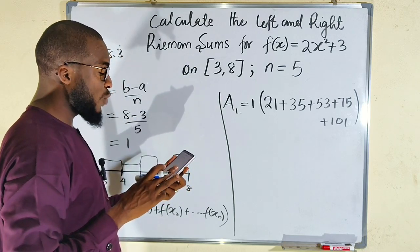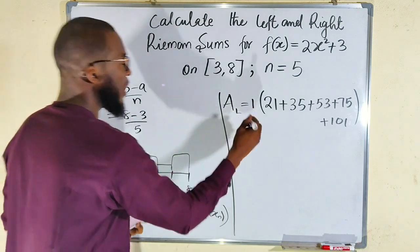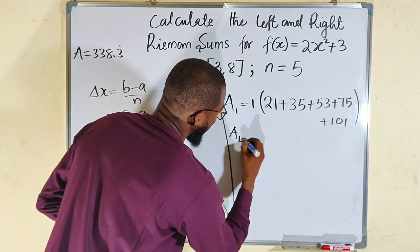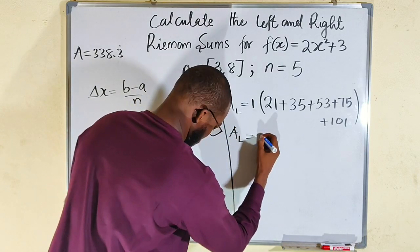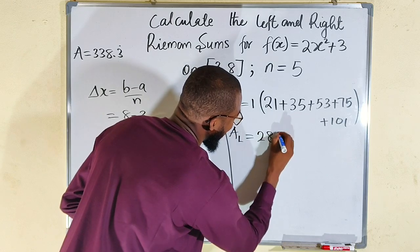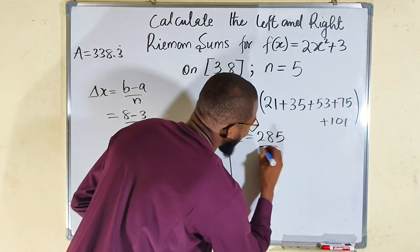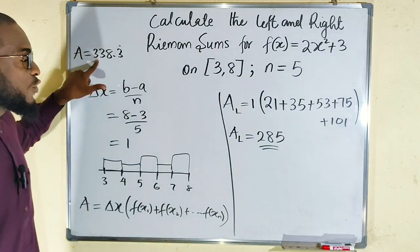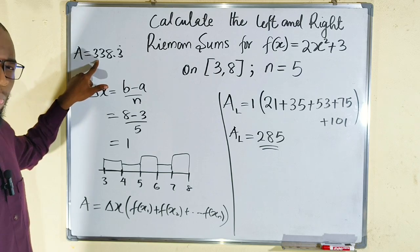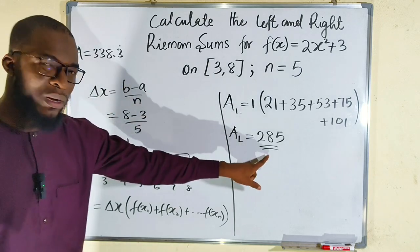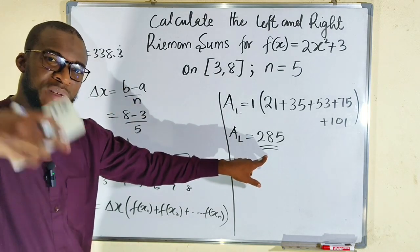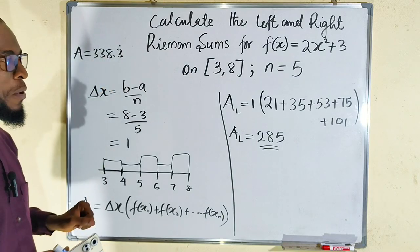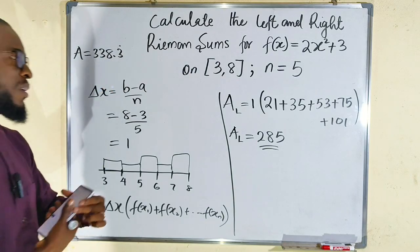Adding all those values together: 21 plus 35 plus 53 plus 75 plus 101 equals 285, multiplied by 1 remains 285. Comparing to the actual area of 338.3, the left Riemann sum has underestimated the actual area.